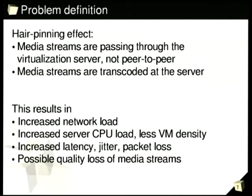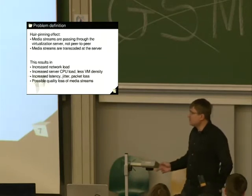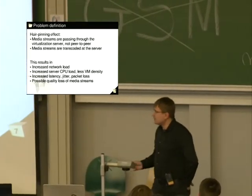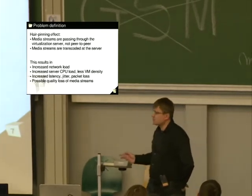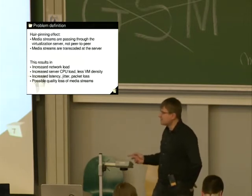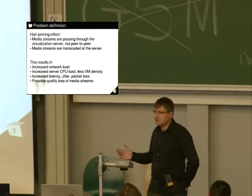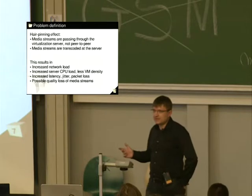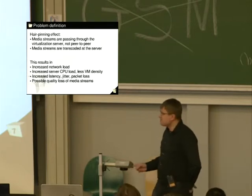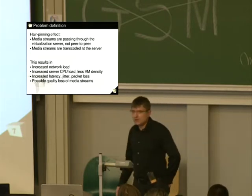So we can highlight the following problems here. It is sometimes called the hairpin effect. So media streams are passing through the virtualization server, not peer-to-peer. And also the streams are transcoded at the server. Transcoding can increase the CPU load and decrease the VM density of this virtualization server. But the main part is that streams are passing through the virtualization server, so it increases the network load. And the worst effect is increased latency, jitter, and maybe packet loss if these networks are unreliable. So if, for example, the virtualization server, the client, and the far end are located in different places, a few hundred kilometers away from each other, this becomes very ineffective. And for example, VoIP solutions stop working.